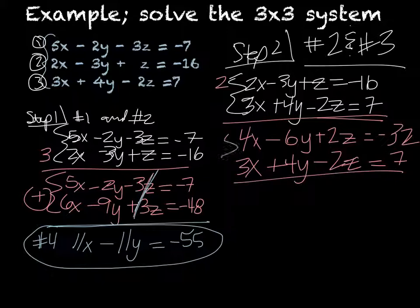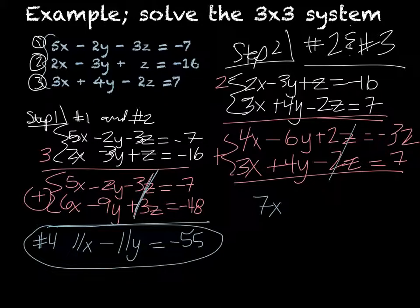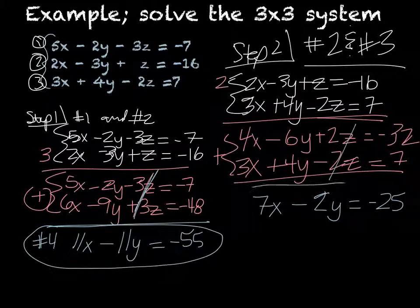Adding down, the z's cancel as intended, leaving me with 7x minus 2y equals negative 32 plus 7, which gives me negative 25. I'll call that equation number 5. Now I have a 2x2 system in x and y.